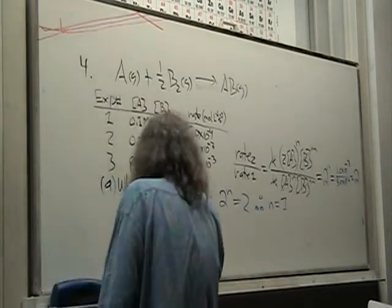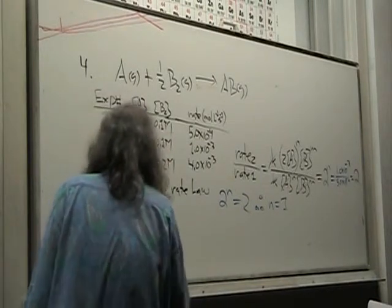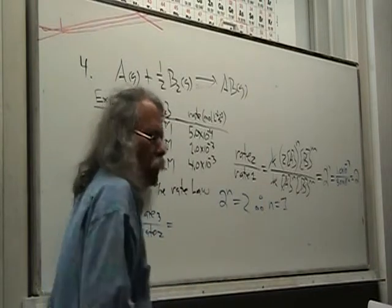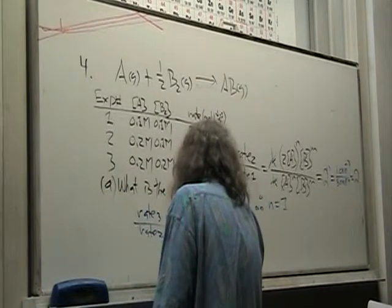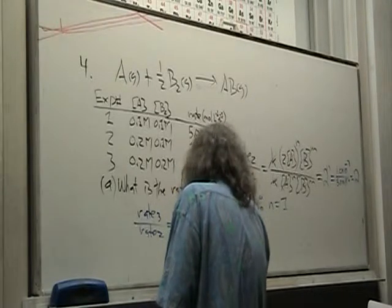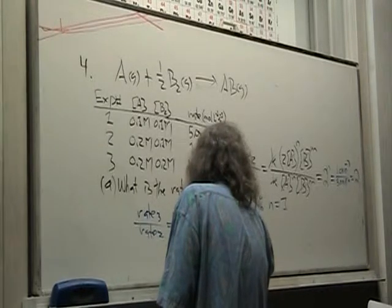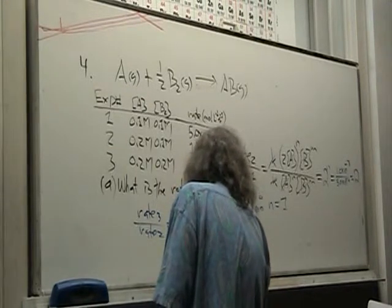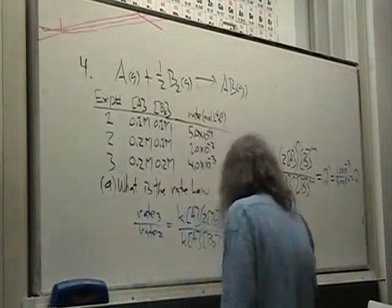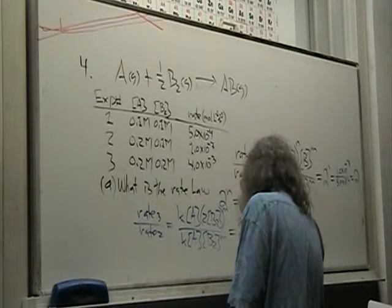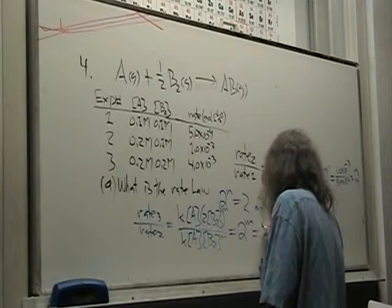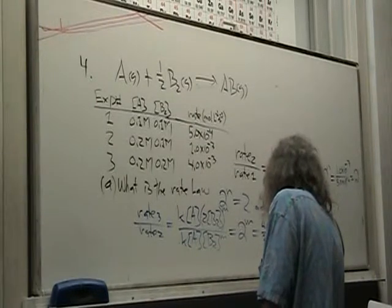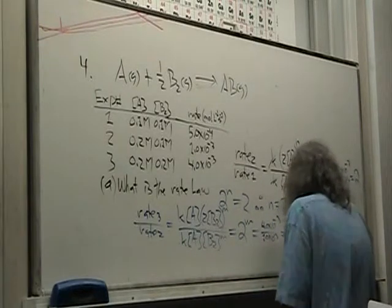And so, I'm going to take rate 3 over rate 2. And do the same thing. It could be equal to K times A, which is first order, times 2 times B to the M over K times A. Okay? And that does the same thing. It drops out. And that gives us 2 to the M. And that is equal to 4.0 times 10 to the minus 3 over 1.0 times 10 to the minus 3.